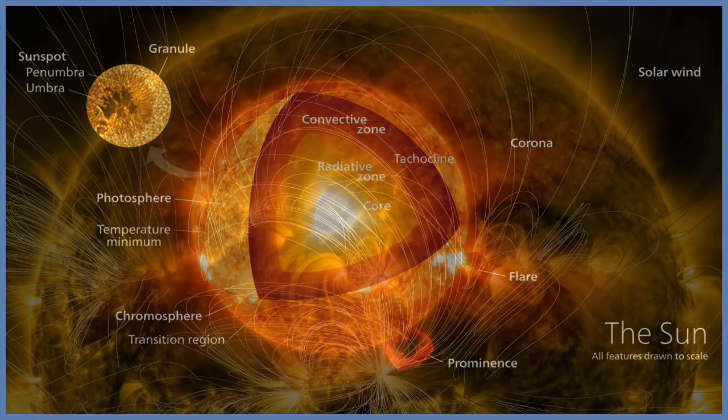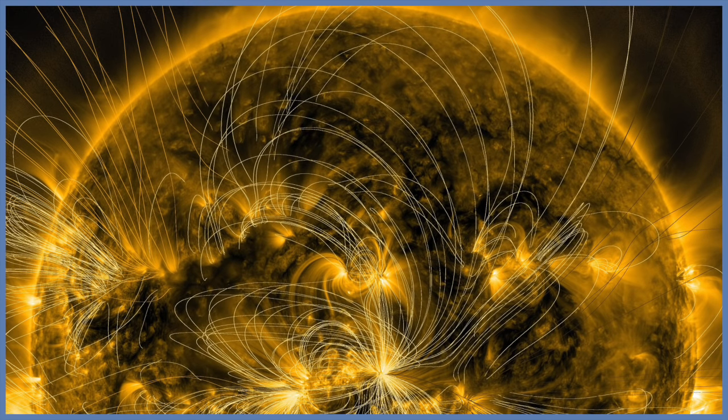Somewhat bizarrely, the very outer layers of the sun, the chromosphere and the corona, are hotter than the photosphere. This is probably because of the heat that is generated from the magnetic field of the sun.